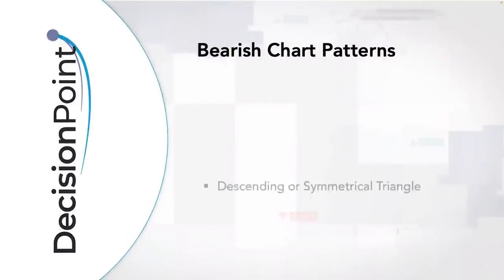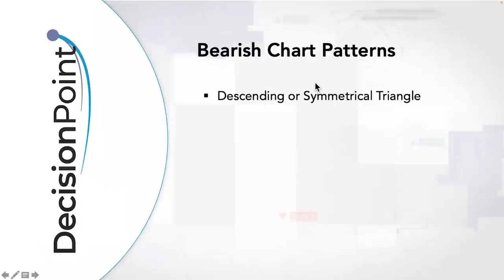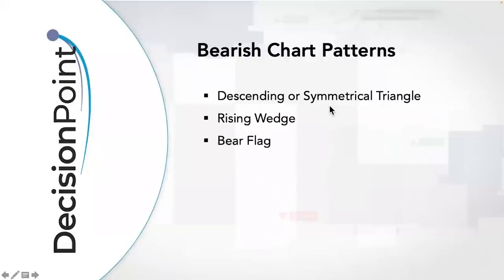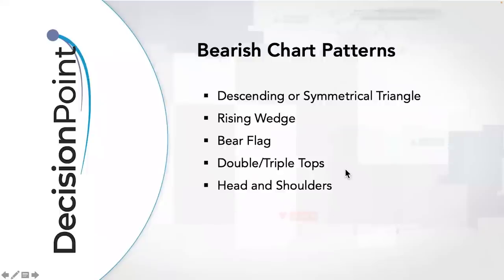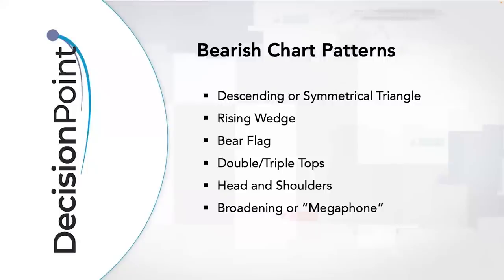Now let's talk about bearish chart patterns. The first is the descending or symmetrical triangle — remember the symmetrical triangle can also be a bearish continuation pattern depending on the prior trend. There's also the rising wedge, which we've been seeing quite a bit of, the bear flag, double and triple tops, and the most famous bearish pattern — the head and shoulders, though it's one of my least favorites as it rarely resolves to the minimum downside target. Then there's the broadening or megaphone pattern, and of course parabolics, which Carl Swenlin and I often discuss as very dangerous.